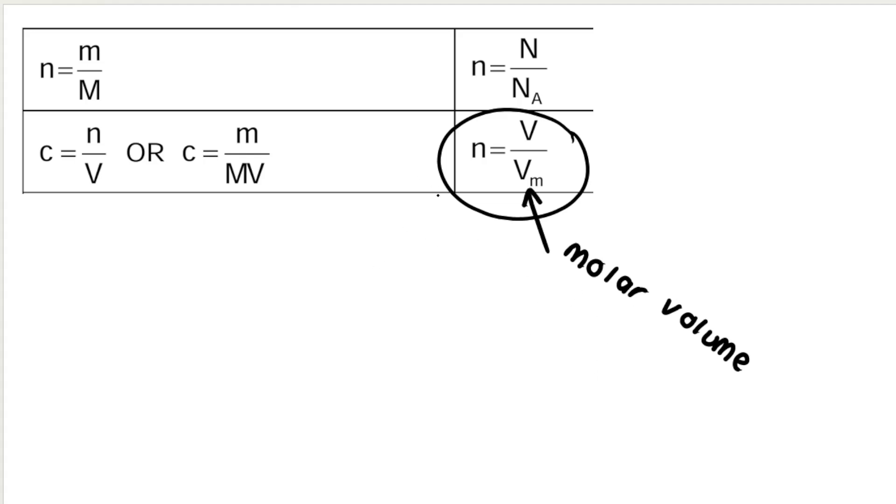So therefore, we have to assume that it is at STP, or they should actually tell us. Because when the reaction takes place at STP and a gas is produced, the molar volume is 22.4. This is given on the formula sheet.